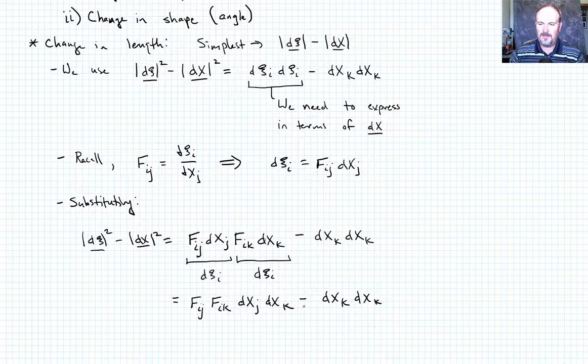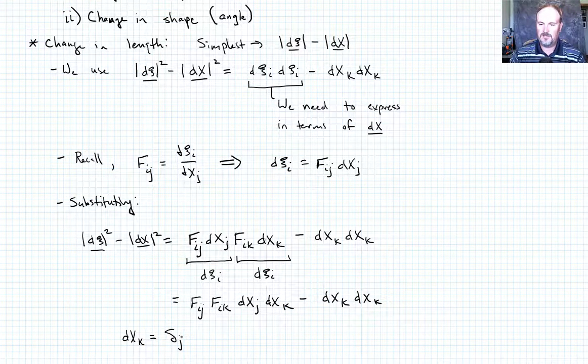Okay, so now what we need to do is, it would be really nice if we could factor something, right? So if I could pull out a DX_j DX_k term. So I have that here. Here I have a DX_k DX_k. So I can't really factor it. So I have to do a little bit of substitution.